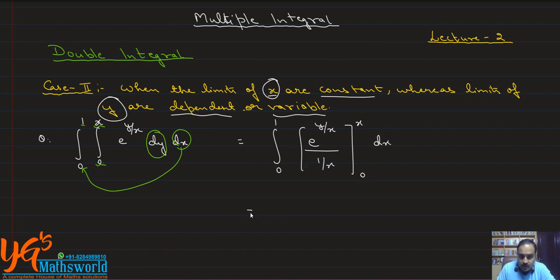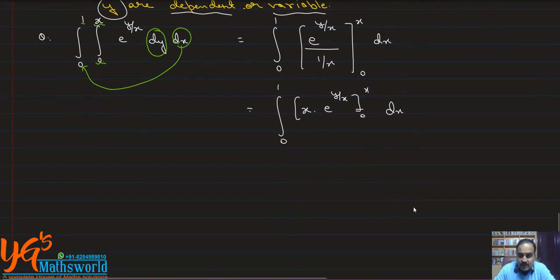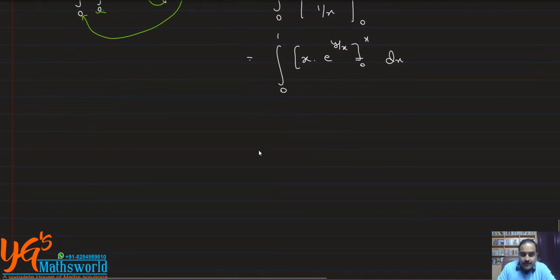So from 0 to 1, the factor 1 over x converts to x times e raised to power y over x, with limits 0 to x, and dx. Now we take upper limit minus lower limit.